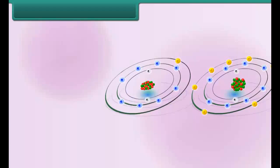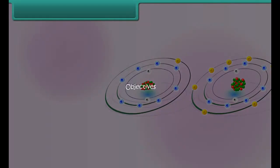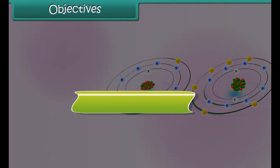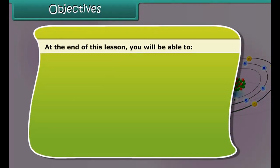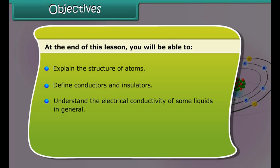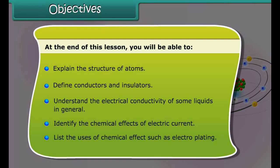Objectives: At the end of this lesson you'll be able to explain the structure of atoms, define conductors and insulators, understand the electrical conductivity of some liquids in general, identify the chemical effects of electric current, and list the uses of chemical effect such as electroplating.